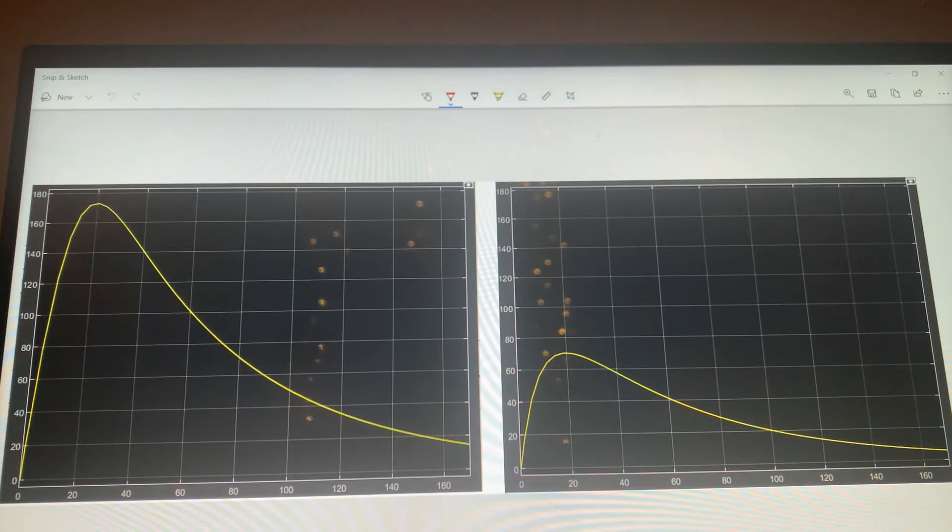These graphs illustrate blood alcohol level as a function of time in minutes. Our changing variable was A0. A0 represents the initial amount of alcohol consumed. A0 originally was 245 milligrams per liter in the stomach. This is demonstrated with the graph on the left.